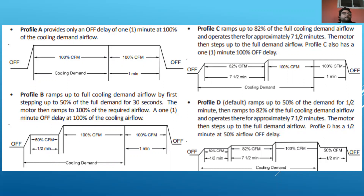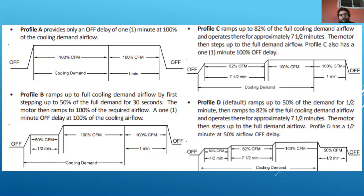Profile D, which is the default, is probably our best option as long as it works for the customer. For the first half minute, we run at 50% fan speed to get the coil really cold, then bump up to 82% — doing as much dehumidification as we can. If we don't meet our set point after about eight minutes, we bump up to 100% fan speed. My recommendation is to set it to Profile D, but talk to your customers and use your judgment to figure out what works best for the equipment.